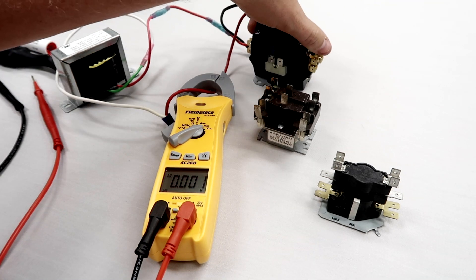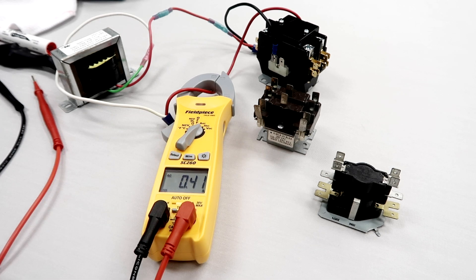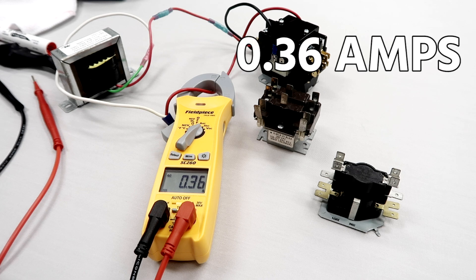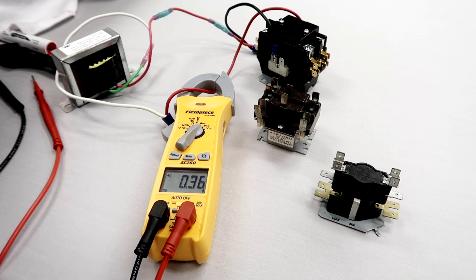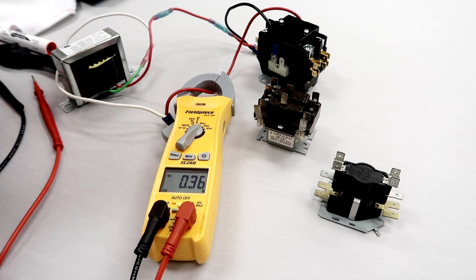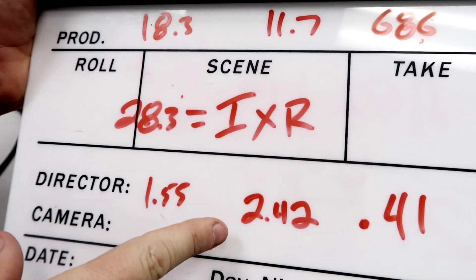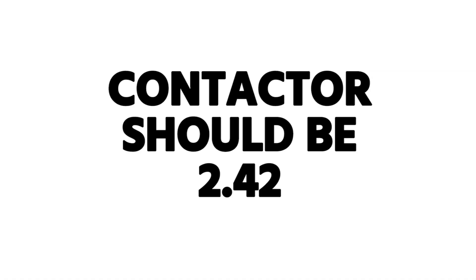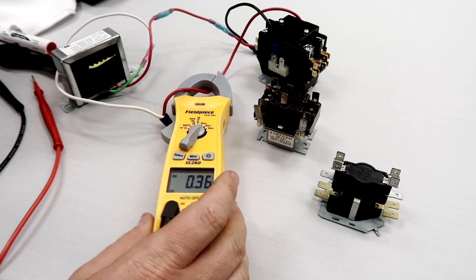This is the electromagnetic coil that I'm plugging into on both sides to a 24-volt transformer. I'm going to flip the switch on. You heard the contactor pull in, and our amps are only 0.36 amps. We had calculated 2.42 amps, but in actuality we only have 0.36, which means Ohm's Law is not a liar — we have some resistance showing up somewhere, and that resistance is what we call inductive reactance.